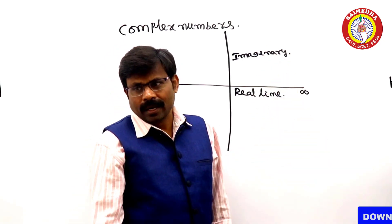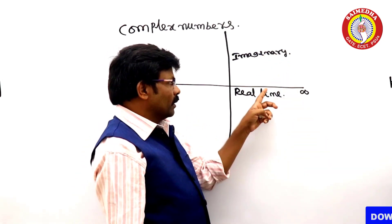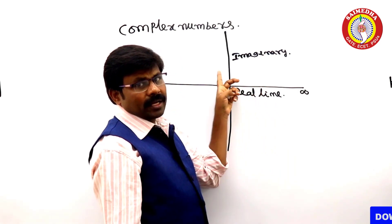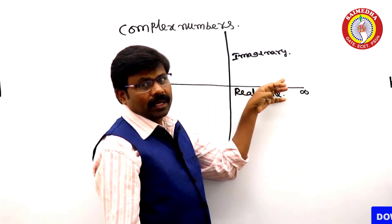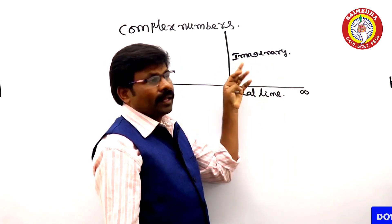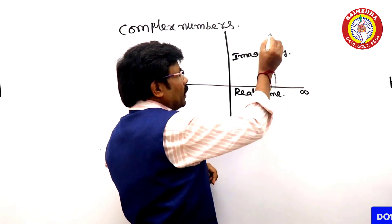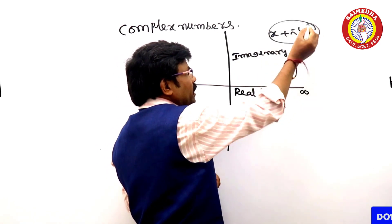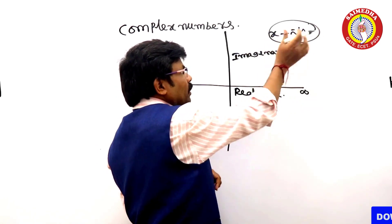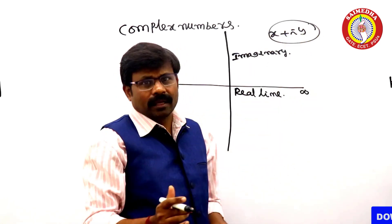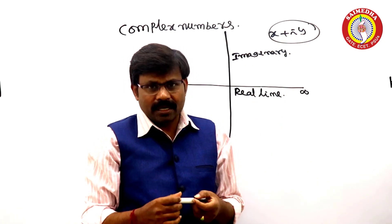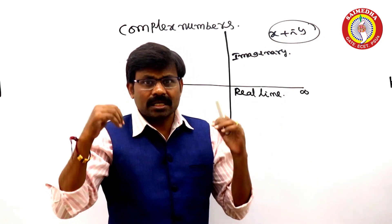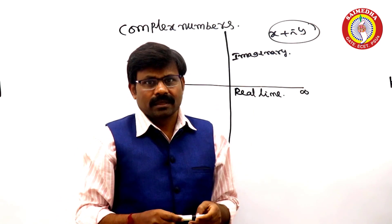If it is a two-dimensional one, then a complex number is x plus yi. x plus yi is two-dimensional. Complex numbers are related to the real numbers.